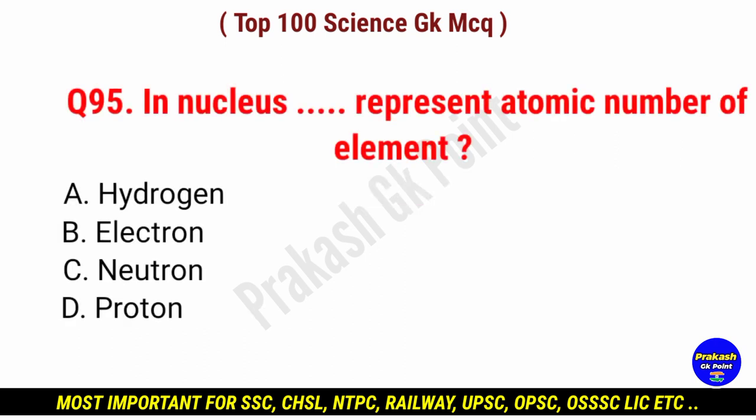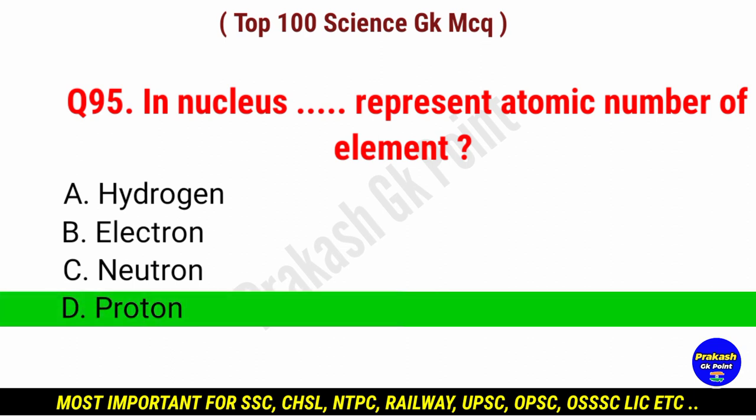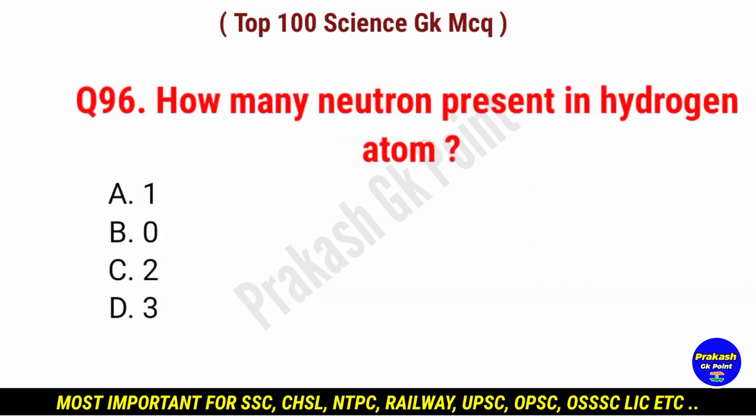In nucleus, what does represent the atomic number of elements? Answer: option D, proton.